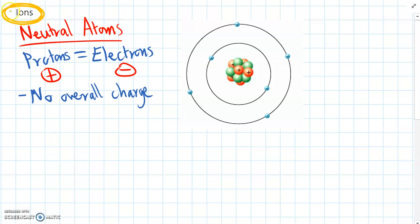And after that, we call them ions. And that's the focus for this video. So ions are different forms of an element with more or less electrons.